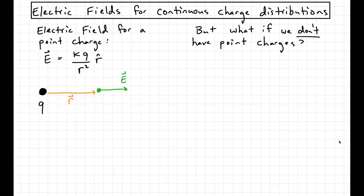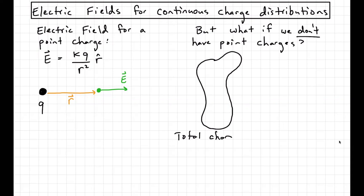When I say a continuous charge distribution, what I mean is: imagine I have some charge on some arbitrary shape. That shape has some total charge on it — let's say we've got some total charge Q on this thing, big Q. And we might want to know, for example, what's the electric field at some point nearby?